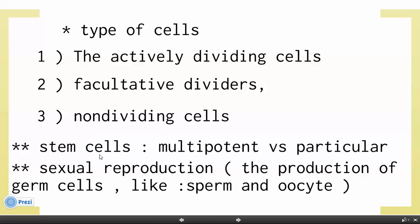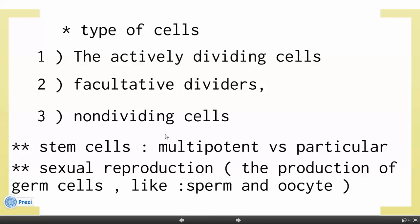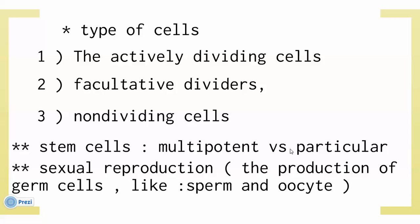The doctor talked about stem cells. Stem cells can be taken at different stages, such as from the embryonic germ layers. Depending on the stage, you might have multipotent stem cells — which can form different types of tissues — or unipotent stem cells, which form only one type of tissue. Sexual reproduction is the production of germ cells like sperm and oocytes.